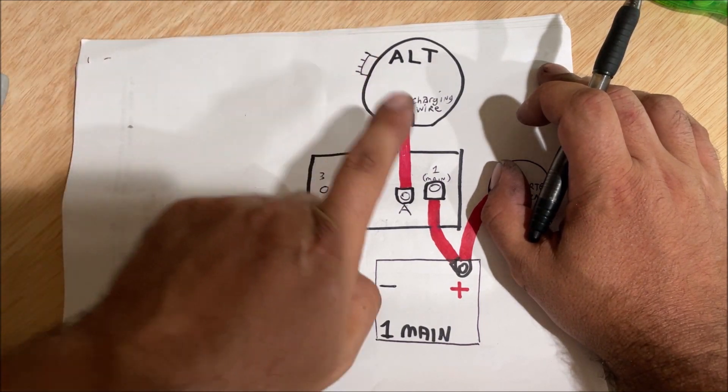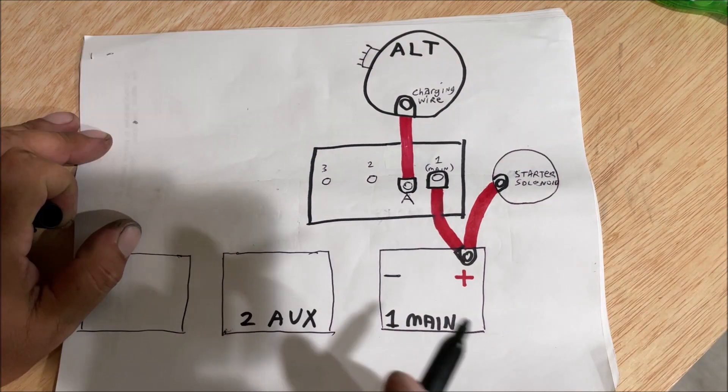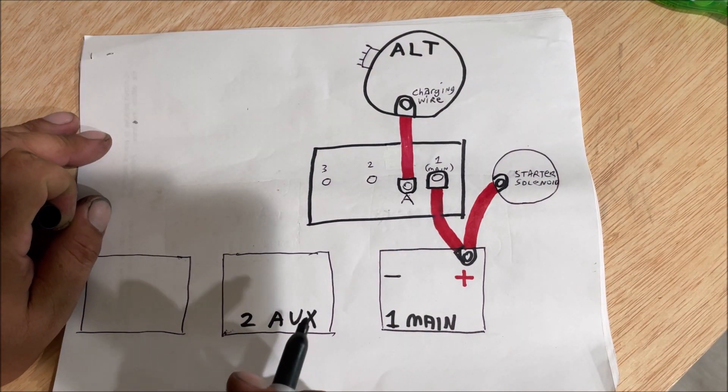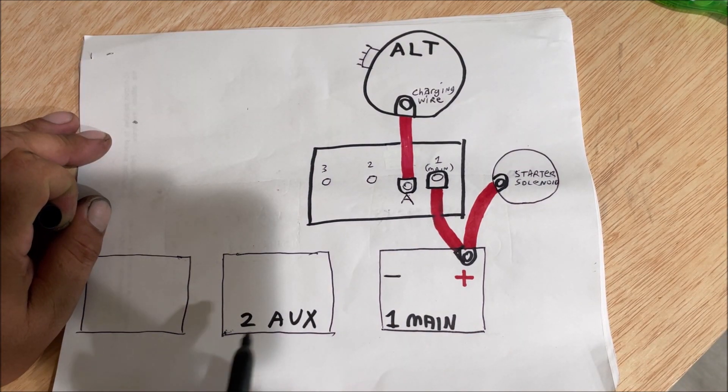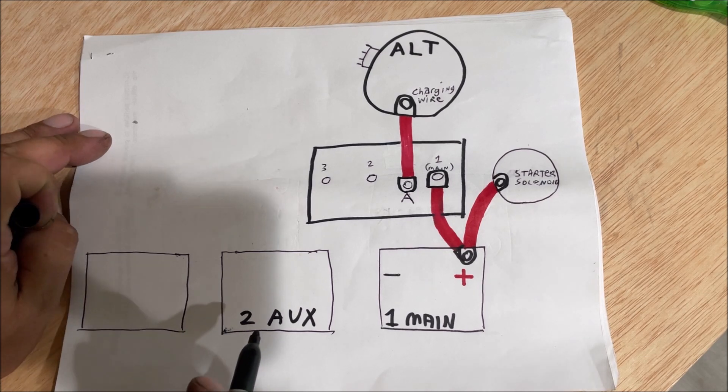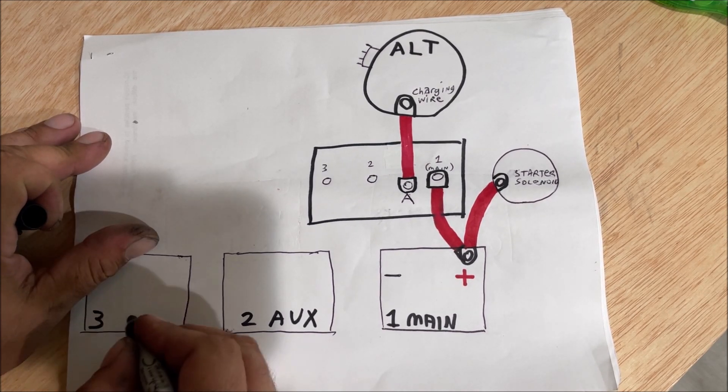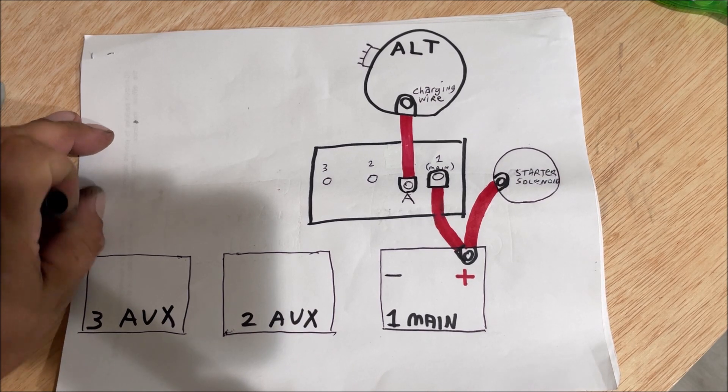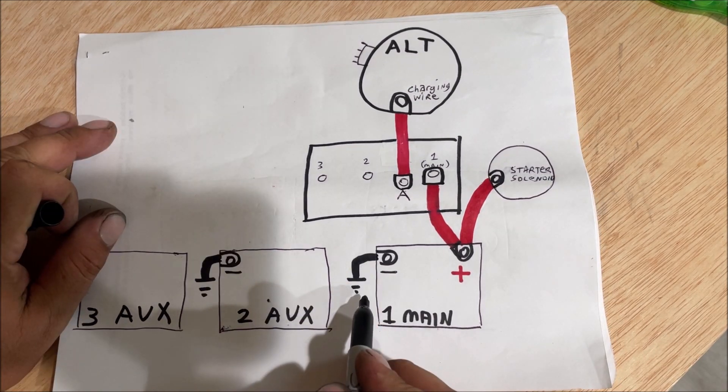Okay, we have number two auxiliary battery. On my truck it's used for the 1600 pound liftgate and to start the Honda generator. Three auxiliary, I don't have it on there, use it for whatever you want. So remember we ground to chassis.